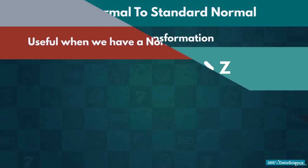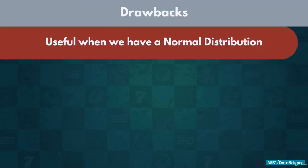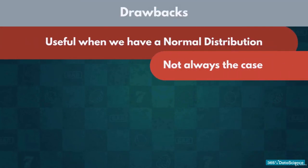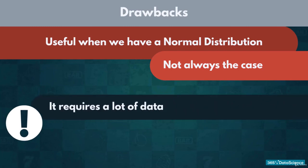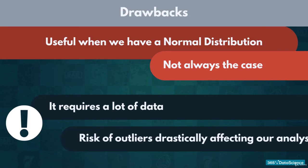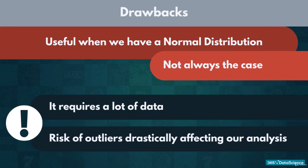Standardizing is incredibly useful when we have a normal distribution. However, we cannot always anticipate that the data is spread out that way. A crucial fact to remember about the normal distribution is that it requires a lot of data. If our sample is limited, we run the risk of outliers drastically affecting our analysis. In cases where we have less than 30 entries, we usually avoid assuming a normal distribution.